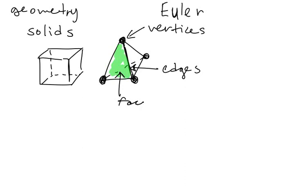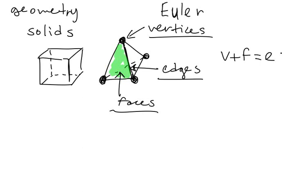These are called phases. This is the origin of these names: vertices, edges, and faces. They are from geometry of solids and not from graph theory itself. So Euler's formula says that for every solid, what holds is that number of vertices plus number of faces equals number of edges plus 2. This is some equality for solids.